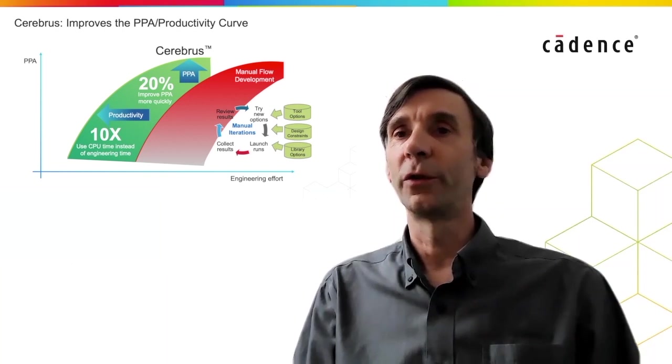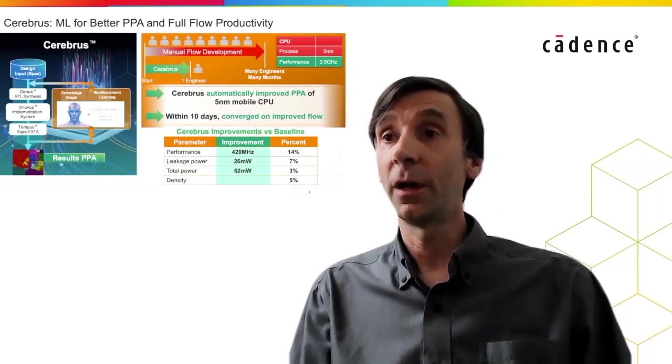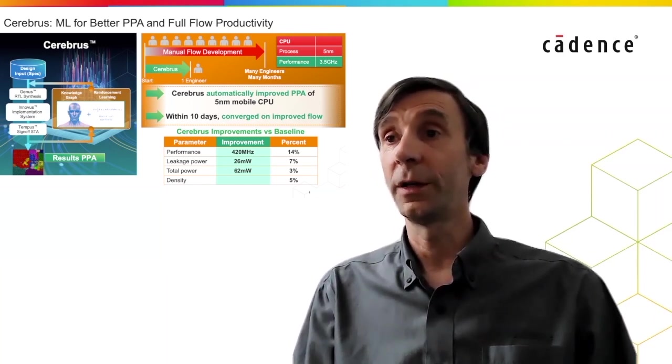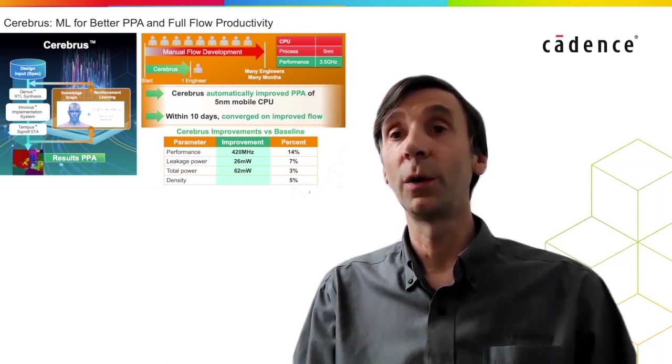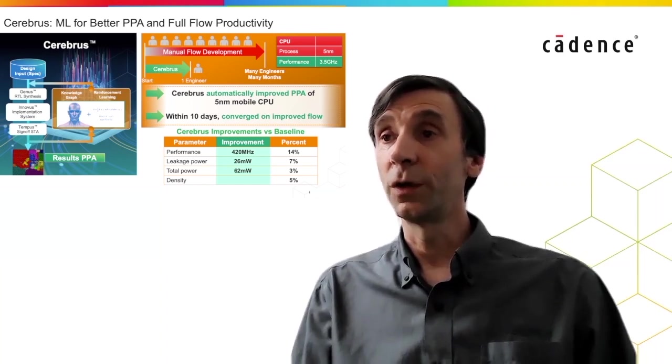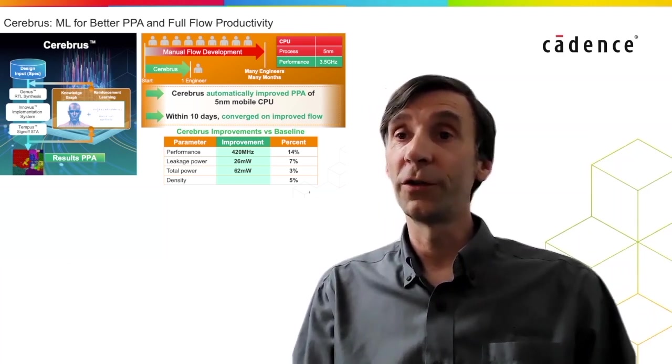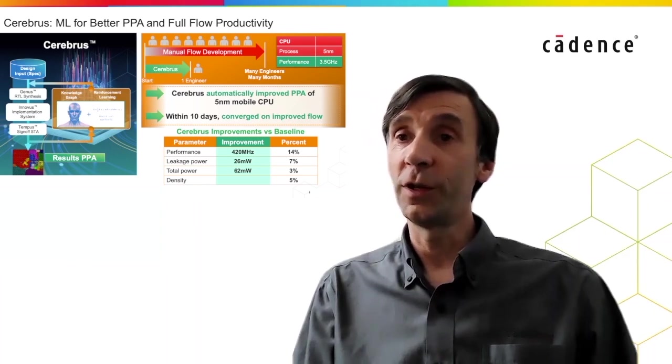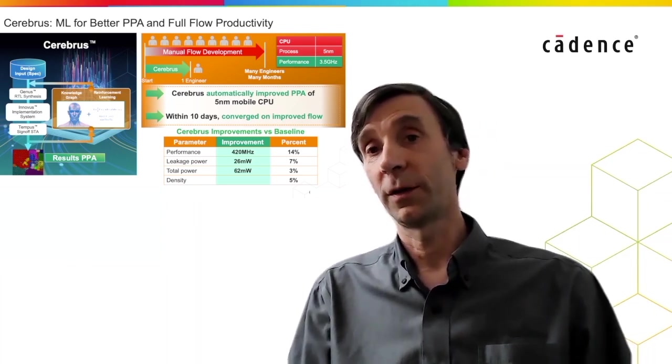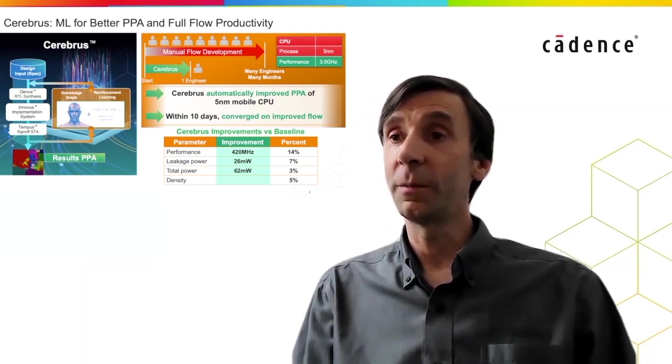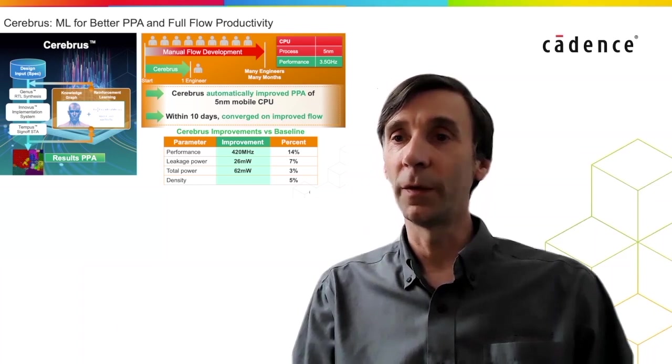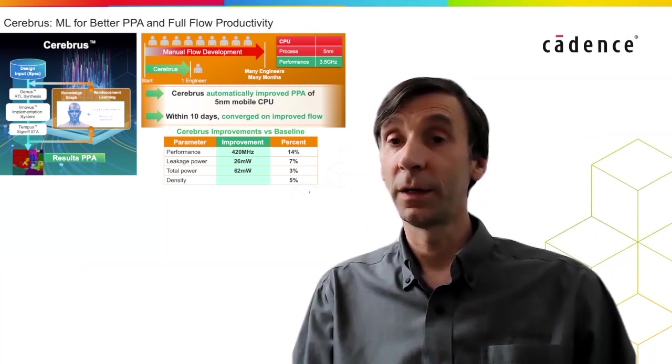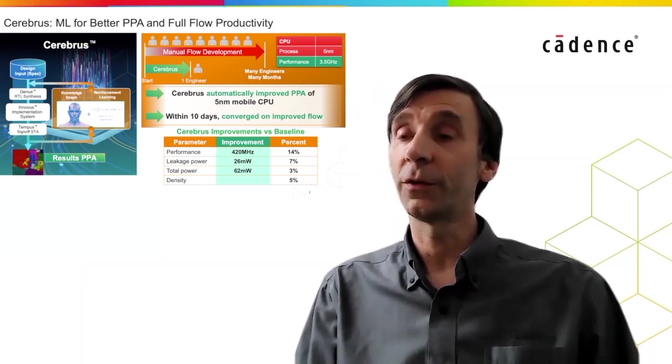Let's take a look at some recent Cerebrus results. This is a typical 5nm high-performance 3.5GHz CPU design. The customer used Cerebrus to automatically optimize the implementation flow to improve power and performance. You can see the results are quite significant, with a 420MHz performance improvement and also good power reduction. This was achieved by one engineer using Cerebrus for about two weeks. If the customer tried this flow tuning manually, it would have taken many engineers a few months, and even then it's questionable if the PPA results would have been achieved manually. This is a great example of the productivity benefits Cerebrus enables.